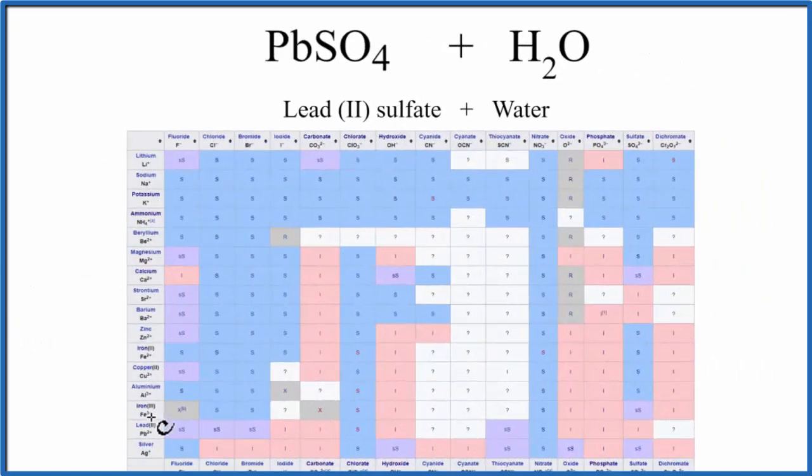So on the left, these are the positive ions, the cations, let's see if we can find lead. Pb2+, there's our lead(II), and then over here we're looking for sulfate SO4 2-. So we go down, and we see right here's where they meet, and there's an I.